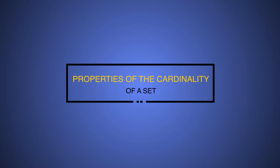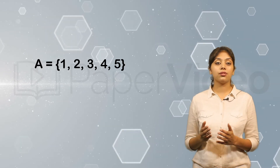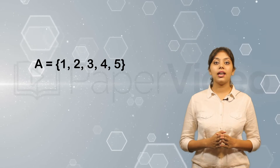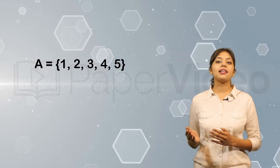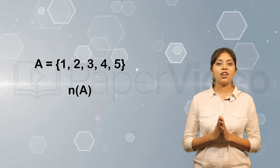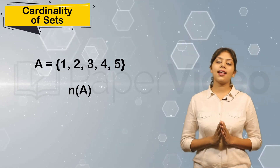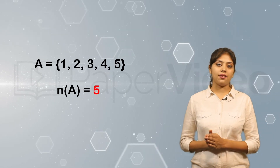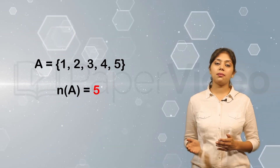Properties of Cardinality of the Set. The objects that form a well-defined collection are called the elements of the set. In this set, the numbers 1, 2, 3, 4, and 5 are elements of the set. The number of elements in the set A is denoted as N, which is also called the cardinality of the set. Here, the cardinality of set A is 5, as there are 5 elements in the set.